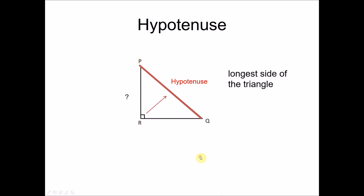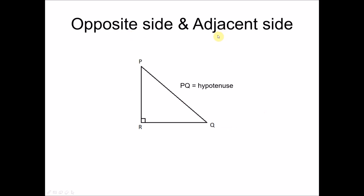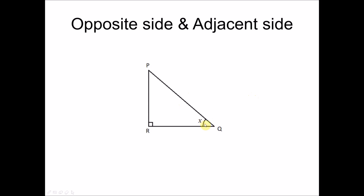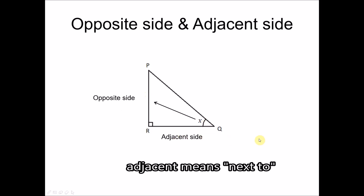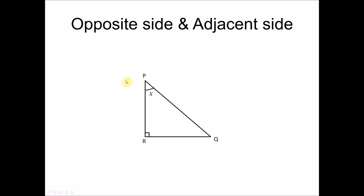The other two sides — PR and RQ — are named the opposite side and the adjacent side, but which is which depends on the reference angle. Taking angle X as the reference angle, the side opposite to angle X is PR, so we name that the opposite side. RQ is adjacent to angle X, so we call that the adjacent side.